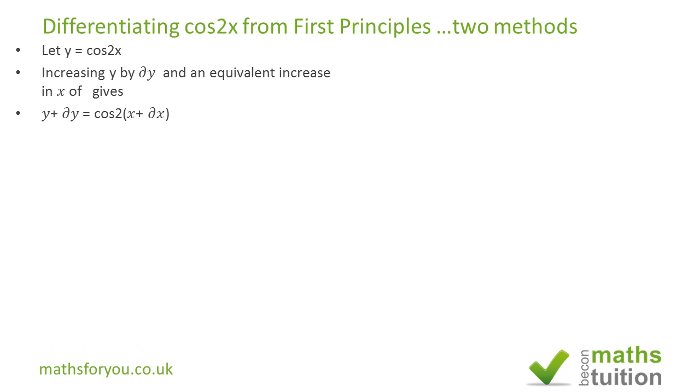If we now subtract y from the left hand side and the equivalent of y from the right hand side, the y's disappear from the left hand side. So we end up with delta y equals cos into 2x plus 2 delta x minus cos 2x, having expanded the brackets there.